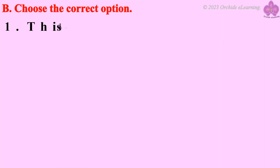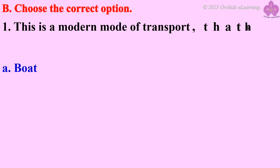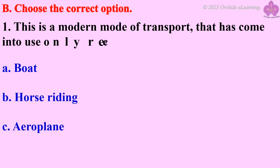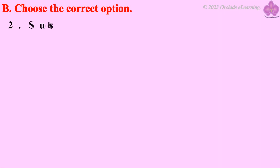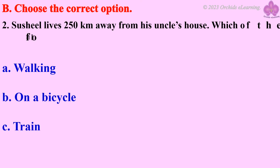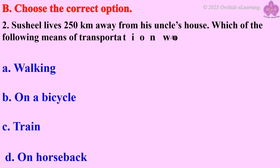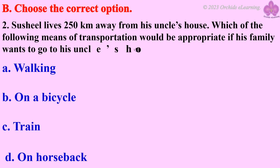B. Choose the correct option. This is a modern mode of transport that has come into use only recently. Sushil lives 250 km away from his uncle's house. Which of the following means of transportation would be appropriate if his family wants to go to his uncle's house? Answer: C. Train.